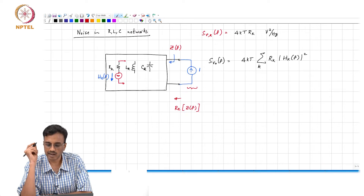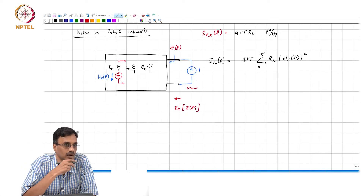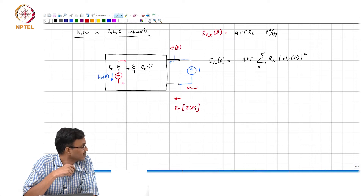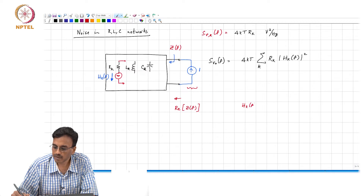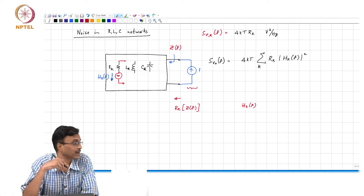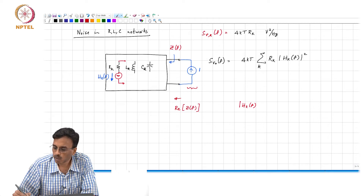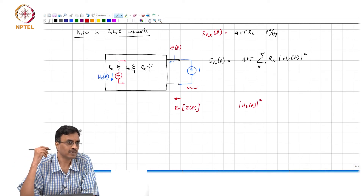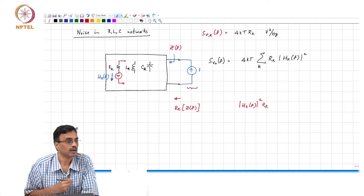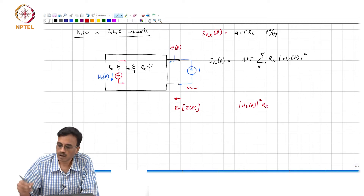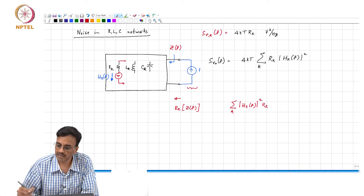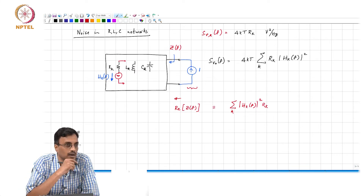Where is all the power inside the box being dissipated? It is being dissipated in the resistors. The current through the kth resistor is h_k(f), so the power dissipated in the kth resistor is |h_k(f)|² times R_k. The total power dissipated in all the resistors is the sum over all k of |h_k(f)|² R_k, and that must equal Re(Z(f)).